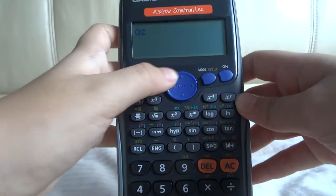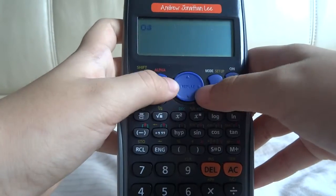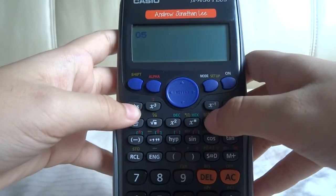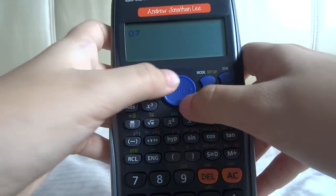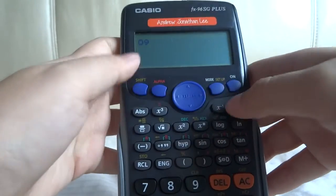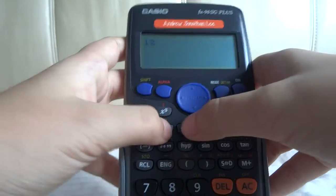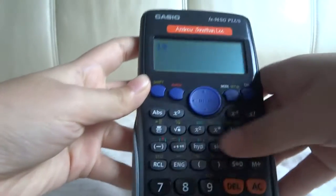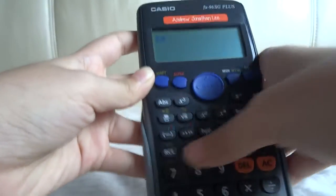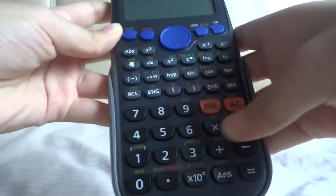So shift, alpha, and then this button or something, and then mode, apps, X to the power of 3, and then 9. And then you can continue pressing buttons in sequence.